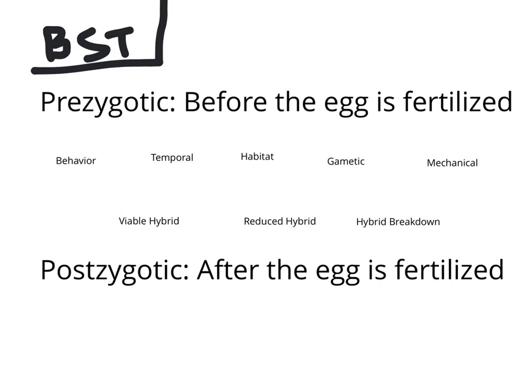These barriers prevent species from interbreeding with another species, but they come before or after the fertilization of the egg. For example, behavior would be prezygotic because it prevents the species from mating — some species have a specific behavior to attract a mate, but if you are a different species, you would not understand that behavioral ritual and would not think that they want to mate.